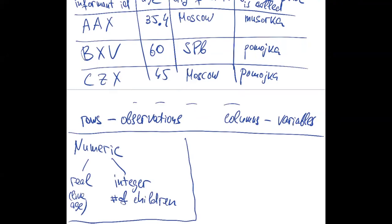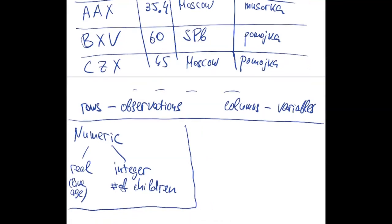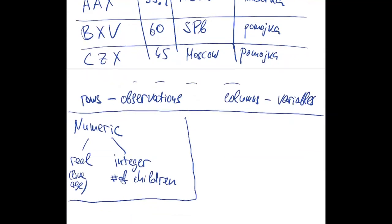Integer numeric variables are usually obtained by counting objects. For example, you can count the number of words in a sentence, and this is an integer variable representing the result of counting. Numeric variables are, in a sense, simple because you can do a lot of mathematical operations with them.